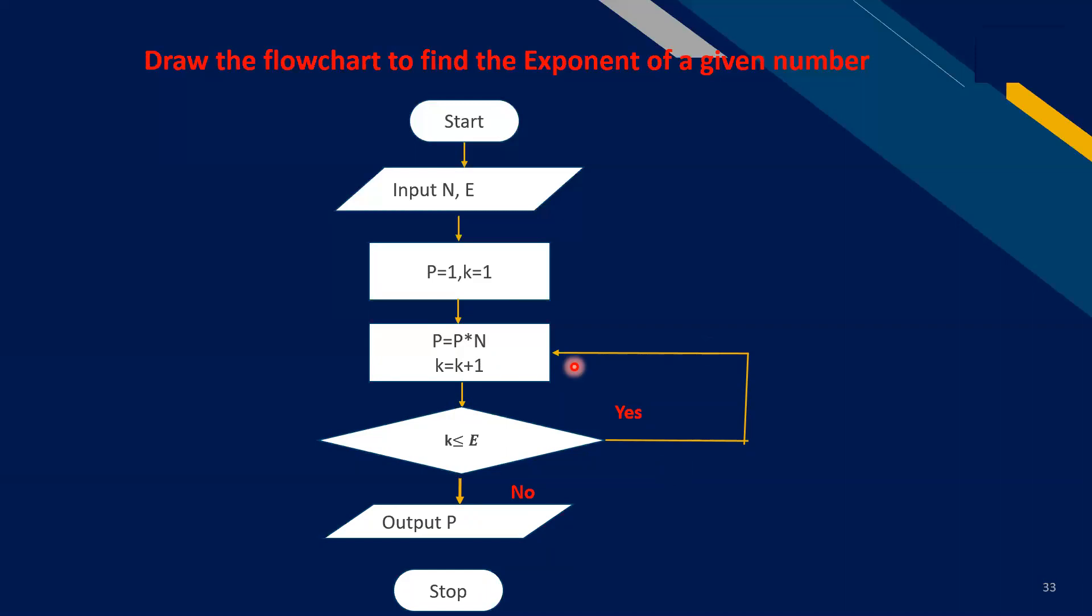Suppose the exponent is 4, 5 exponential 4. This loop will be continued four times. The first time the value of k equals 1 plus 1, 2. This is the power.